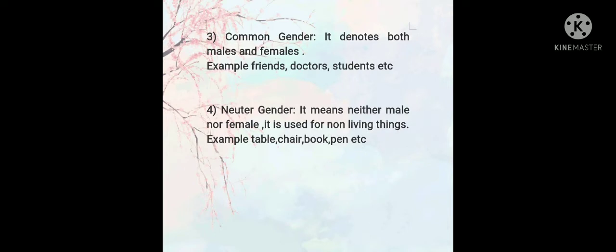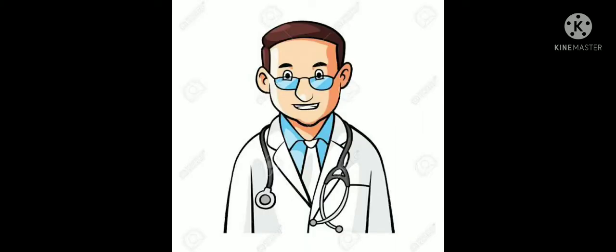Third one is common gender. It denotes both males and females. This indicates both males and females, men and women. We call this common gender. For example friends, doctors, students, etc. When we talk of friend he can be male or female. When we are talking about doctor he can be male as well as female.